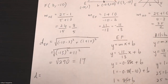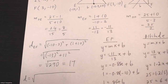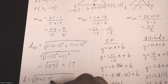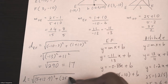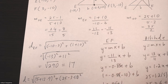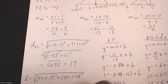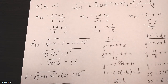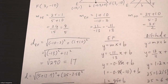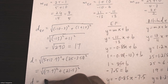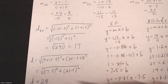Now I can find the height using the distance formula between point D (5, 25) and the foot of the altitude (negative 12.9, 3.52): the square root of (5 plus 12.9) squared plus (25 minus 3.52) squared, which is approximately the square root of 17.9 squared plus 21.5 squared, giving a height of approximately 27.97, which I'll round to 28.